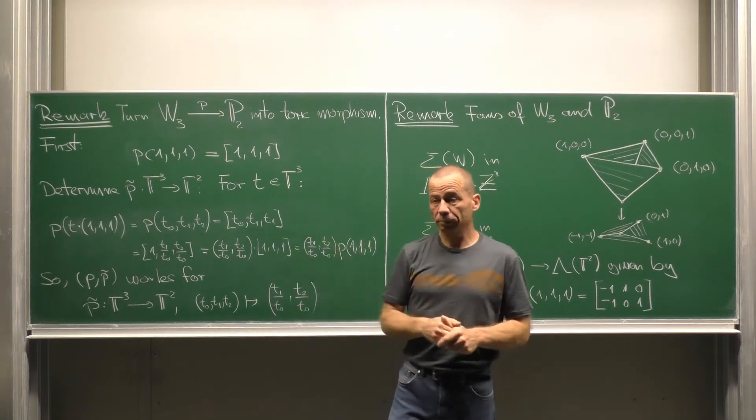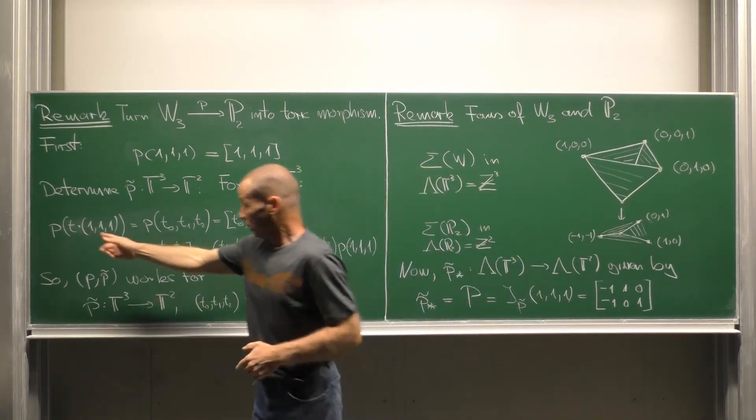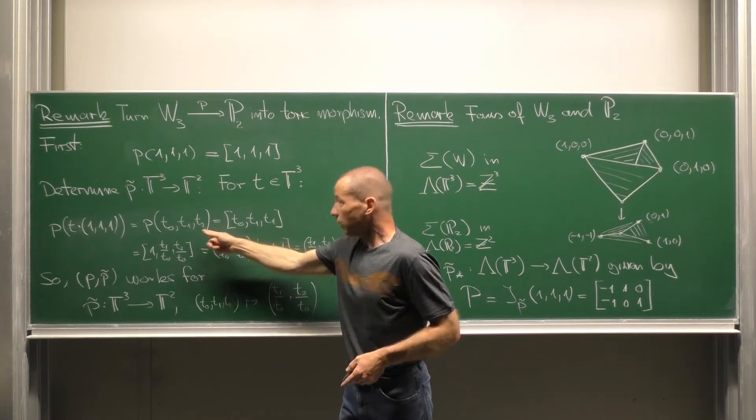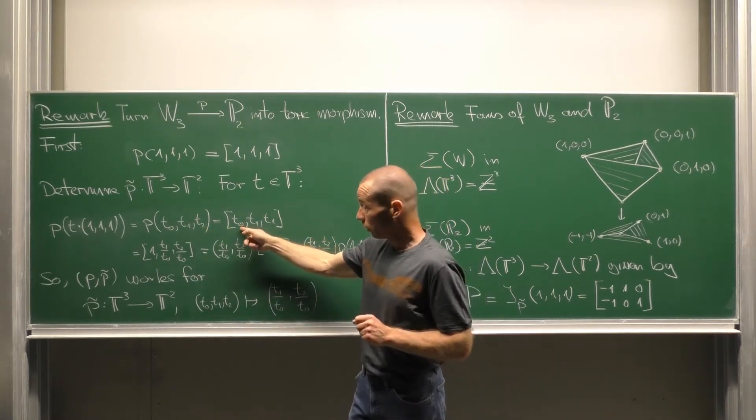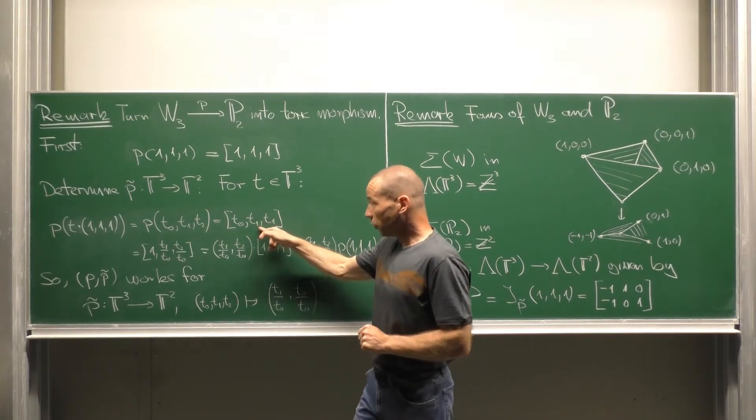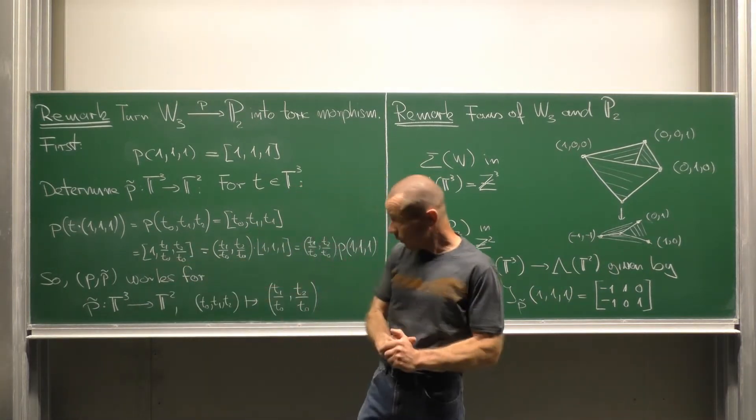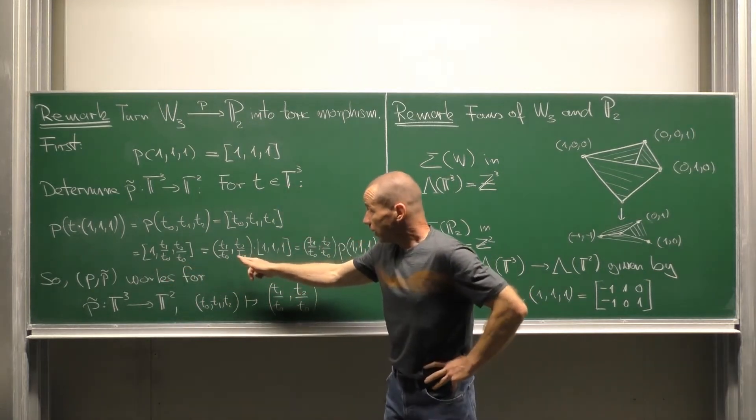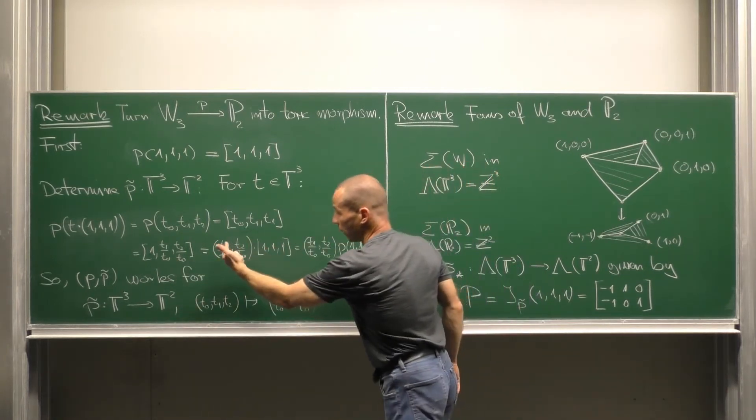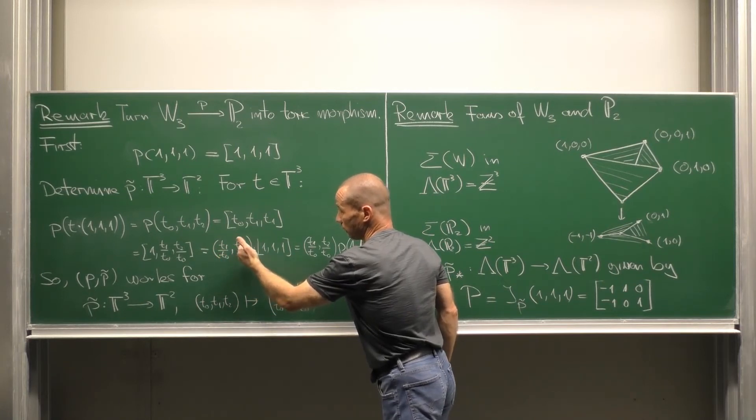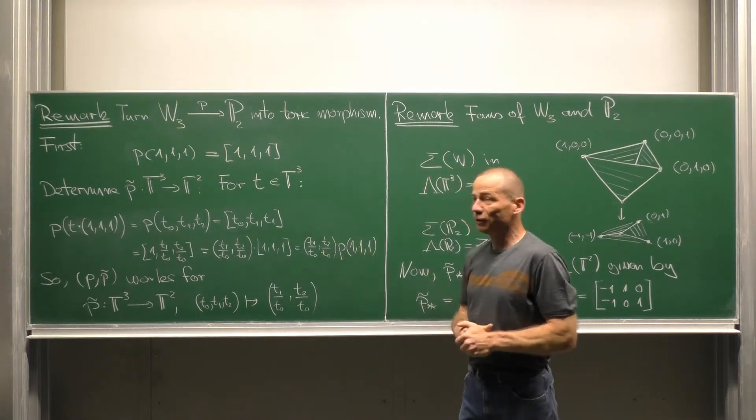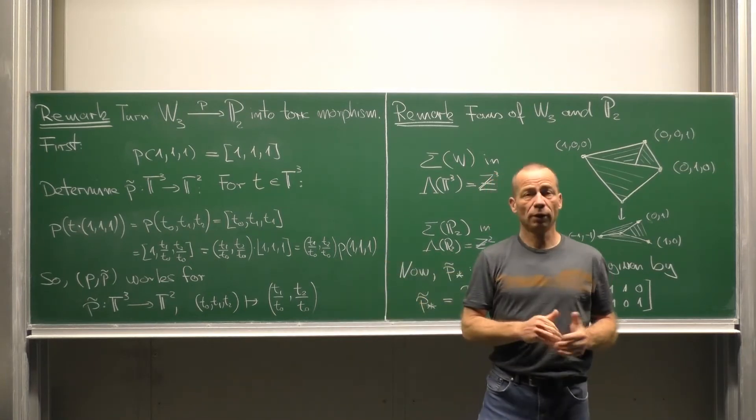For this we take any torus element and look what happens with T dot the base point. So we apply T then map and now observe that this coordinate T₀ has to be non-zero because we have a torus element. So this point in the plane is the same as that one and by the definition of the toric structure of P², this element is the same as applying T₁ over T₀ and T₂ over T₀ to the element (1,1,1).